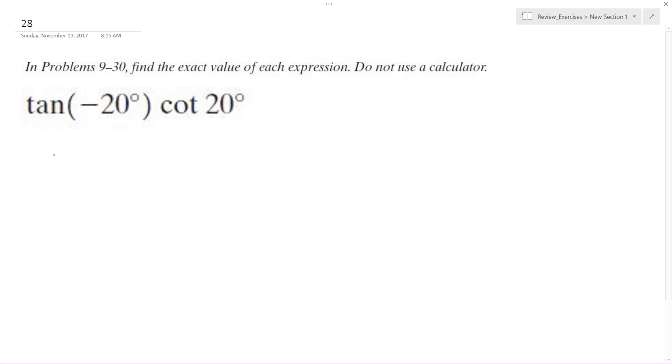So figuring this problem out, we can rewrite this as sine of negative 20 over cosine of negative 20 degrees times cotangent of, cosine of 20 over sine of 20.